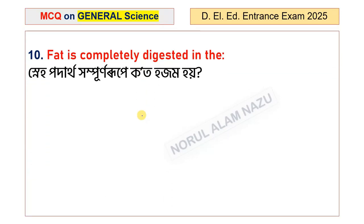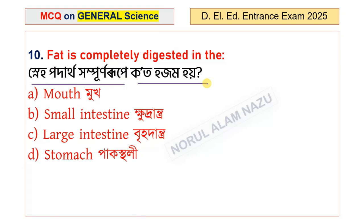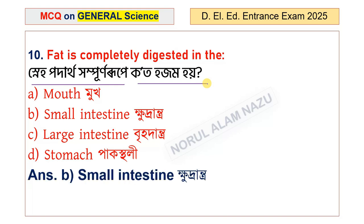Fat is completely digested in the — the options are mouth, small intestine, large intestine, and stomach. The answer is the small intestine.